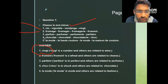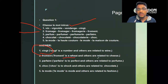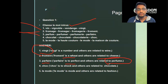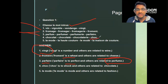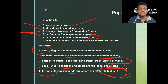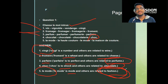Second: 'froment' is a wheat, whereas all others are names of cheese. Third: 'parfaire' is a verb — to perfect — whereas everything else is related to perfume. Fourth: 'choc' is shock, but everything else is related to chocolate. Last: 'l'île' — a masculine noun meaning island — whereas all others are related to fashion: 'la mode,' 'haute couture,' 'la maison de couture' — it's all fashion houses.